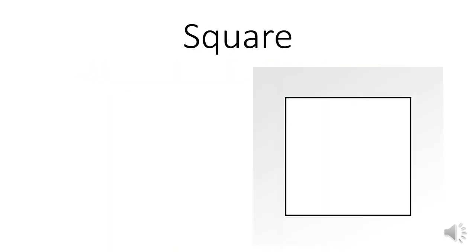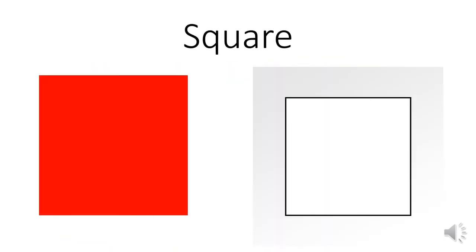The next shape is the square. This is a square. The square is a shape which has four corners and four sides. Let's count the corners: one, two...